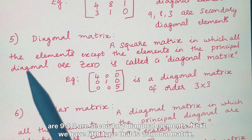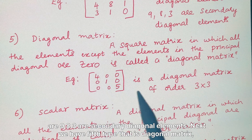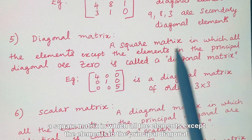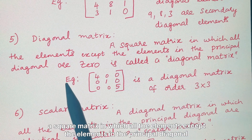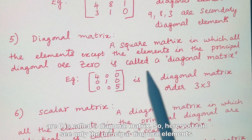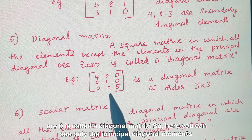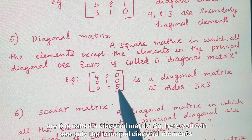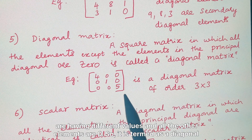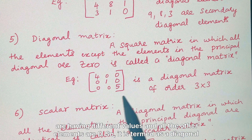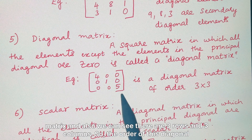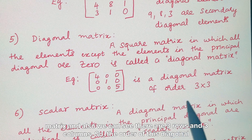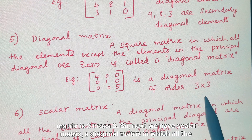The fifth type is a diagonal matrix — a square matrix in which all elements except those in the principal diagonal are 0 is called a diagonal matrix. We can see only the principal diagonal elements have different values and all other elements are 0. The order of this diagonal matrix is 3 cross 3.